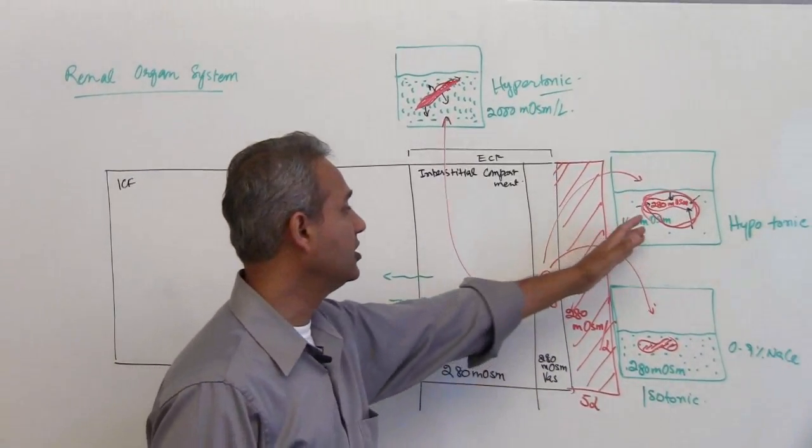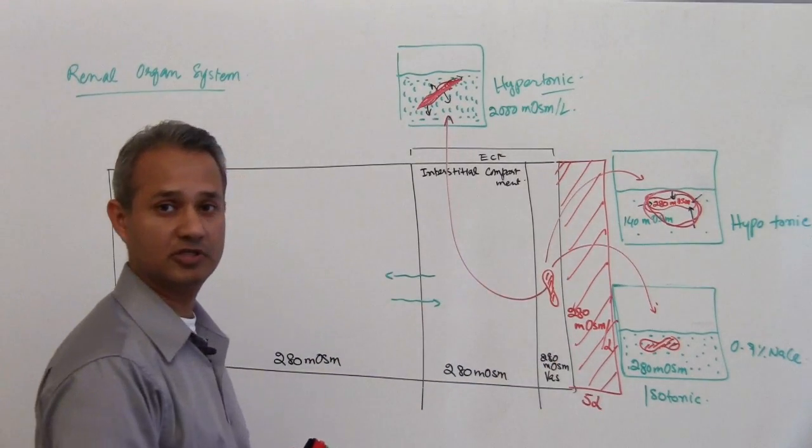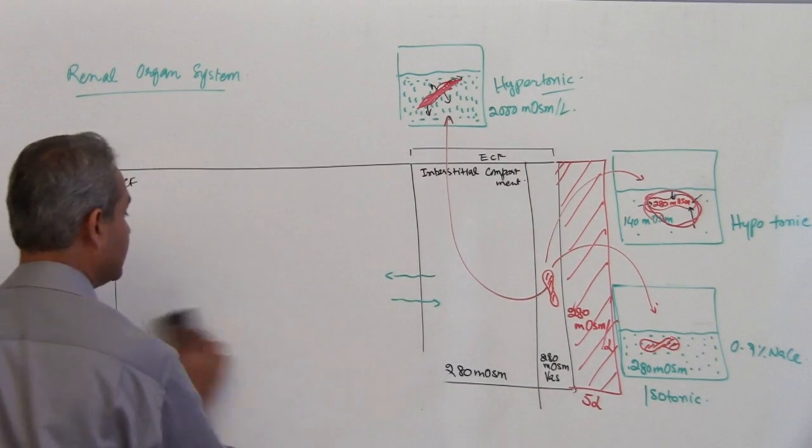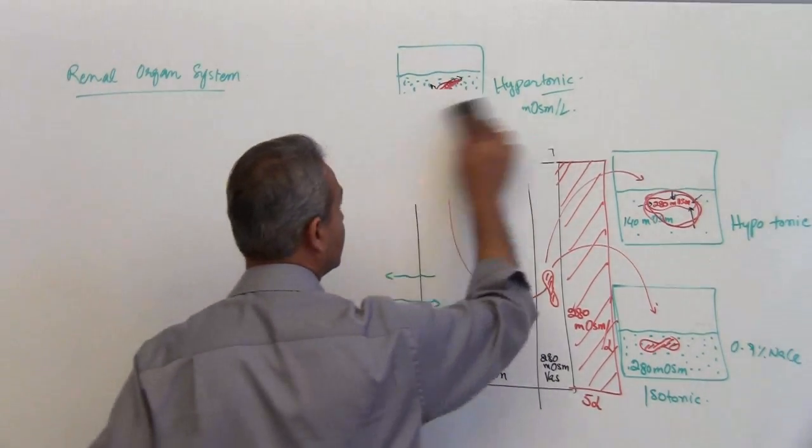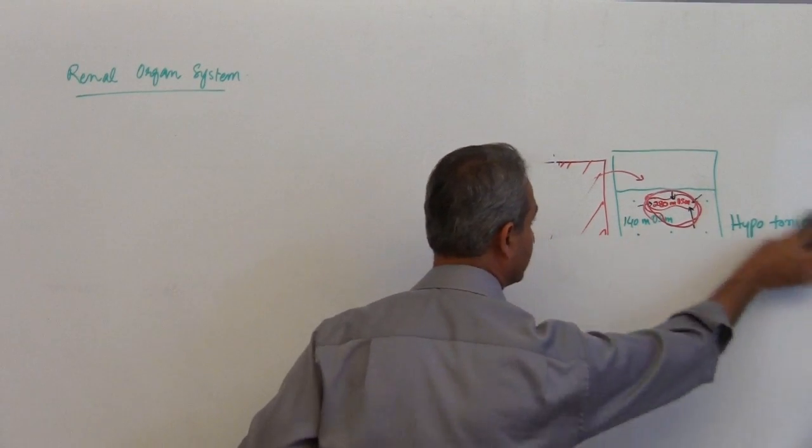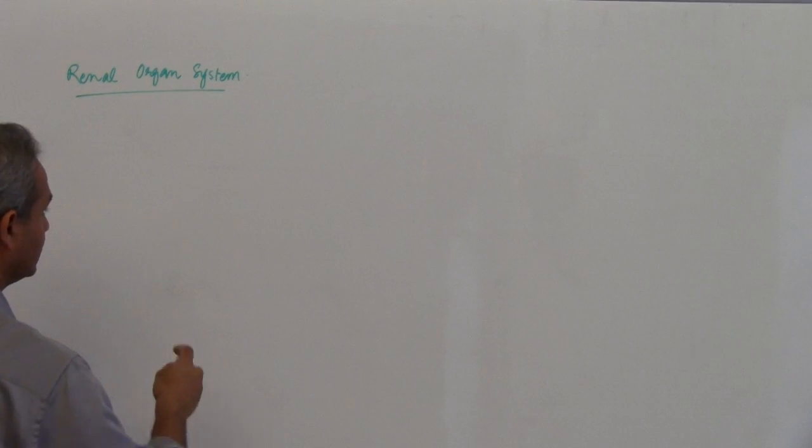Now if I give someone 5 liters of hypotonic solution, then what is going to happen? So let us see. I am going to clear up this diagram a little bit, so let us say now, be very careful.